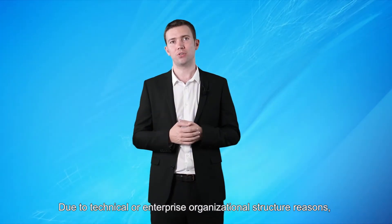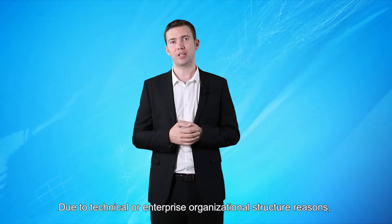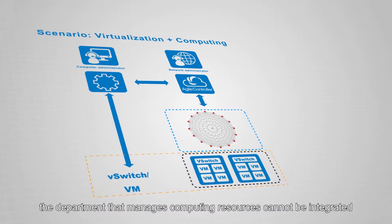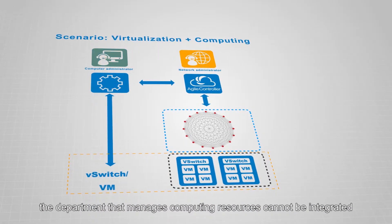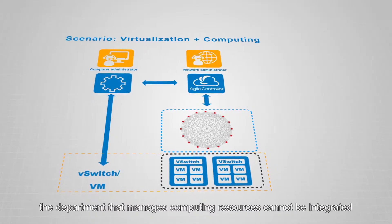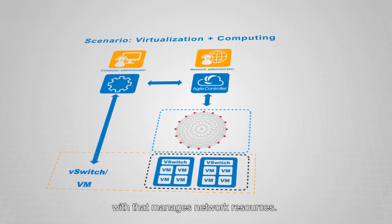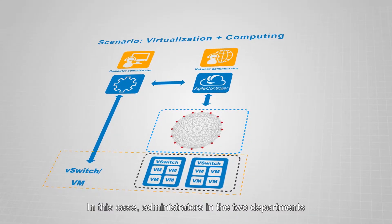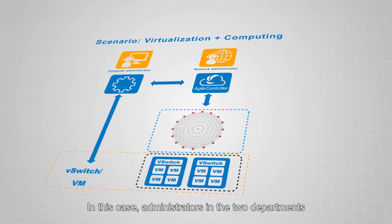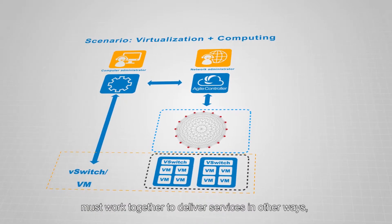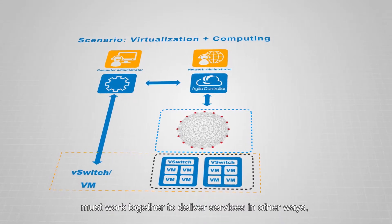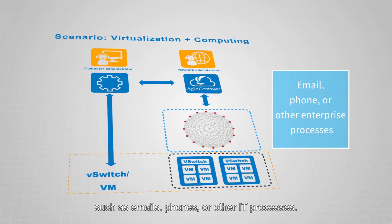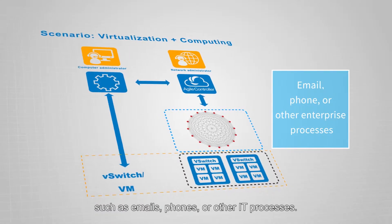Due to technical or enterprise organizational structure reasons, the department that manages computing resources cannot be integrated with the department that manages network resources. In this case, administrators in the two departments must work together to deliver services in other ways, such as through email, phone calls, or other IT processes.